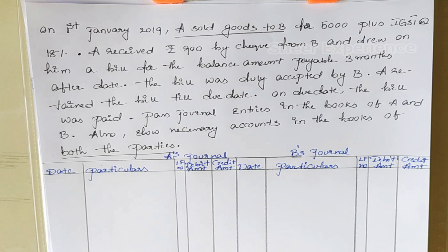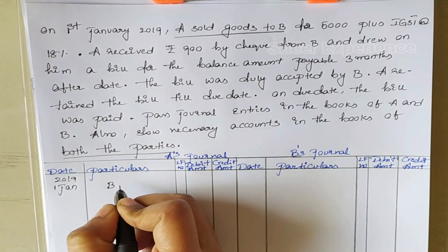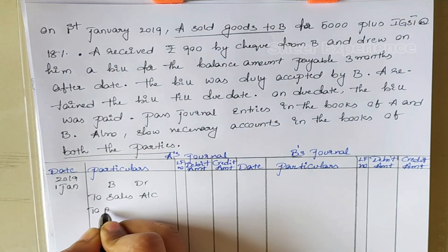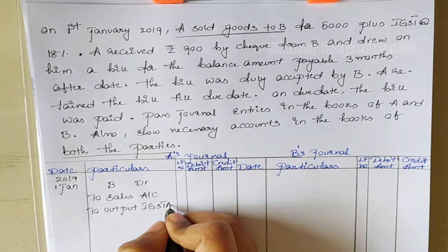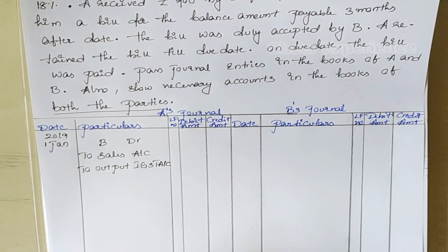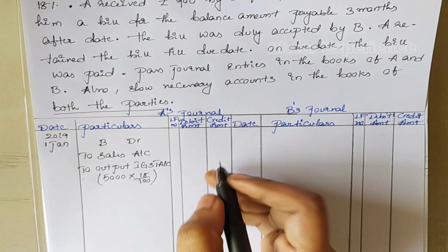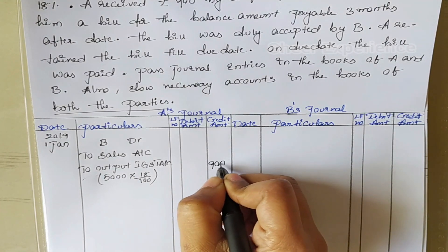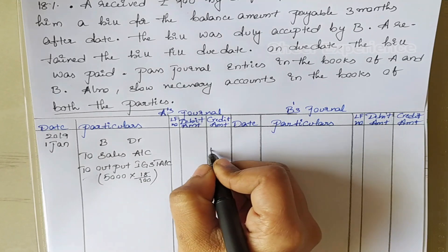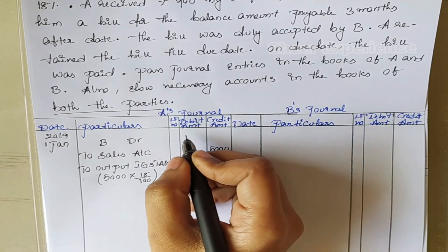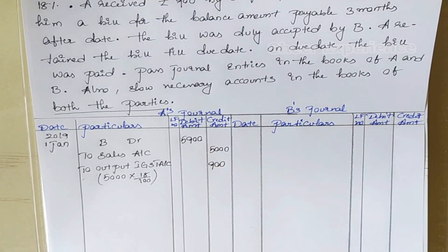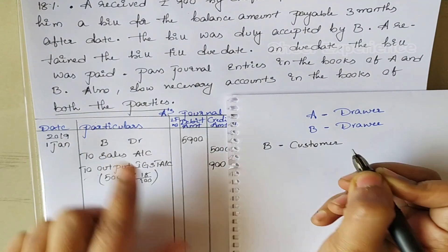A sold goods to B on January 1st 2019 for 5000 plus IGST at 18%. Journal entry in A's books is: B debit to Sales Account, to Output IGST Account. IGST is 18%, so 5000 × 18/100 = 900. We will mention 900 in the credit side for IGST and 5000 for Sales Account. For B account the amount is 5900 — this is the total sale value including IGST.